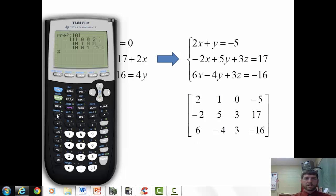So let's go back into second matrix edit. I'm just going to put this back in matrix A. Three rows, enter. Four columns, enter. And we just type it in. 2, 1, 0, negative 5, negative 2, 5, 3, 17. I'm just typing the number and then hitting enter. 6, enter. Negative 4, enter. 3, enter. Negative 16, enter.